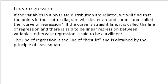What is linear regression? If the variables in a bivariate distribution are related, the points in the scatter diagram will cluster around some curve called the curve of regression. If that curve is a straight line, it is called the line of regression and there is said to be a linear regression between the variables; otherwise regression is curvilinear. The line of regression is the line of best fit obtained by the principle of least squares.